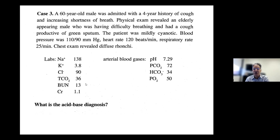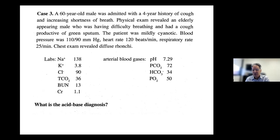Here's another case: a 60-year-old male with a four-year history of cough and shortness of breath admitted with difficulty breathing. The cough was productive of green sputum, the patient was mildly cyanotic, blood pressure was noted, and he was tachycardic with an increased respiratory rate. Focus on the acid-base diagnosis from the numbers.